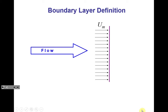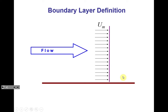Let's start by defining the boundary layer. Consider the very simple case of uniform homogeneous flow. Uniform flow means that velocity — defined with symbol U capital with subscript M — doesn't change direction or magnitude across the flow. We then ask: what is going to change in this velocity distribution if we insert a flat solid plate into this uniform flow?